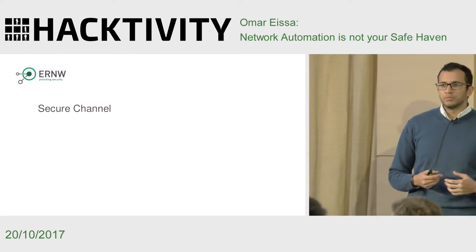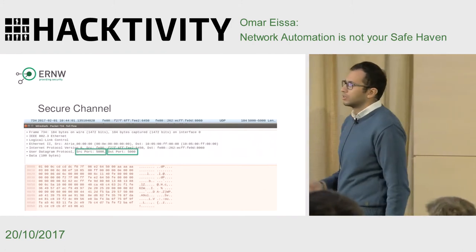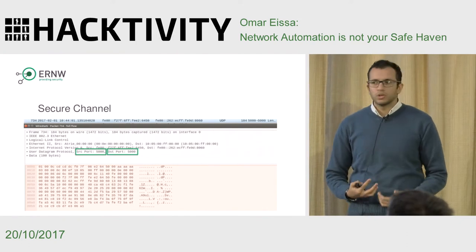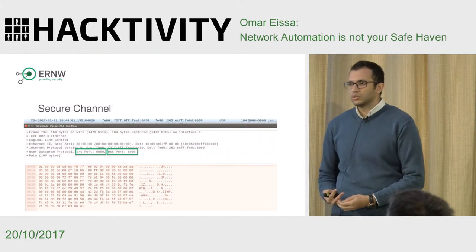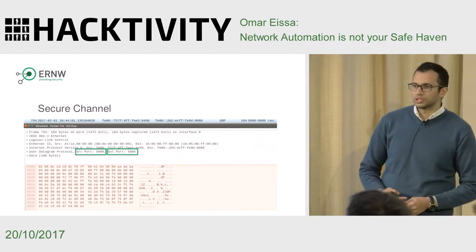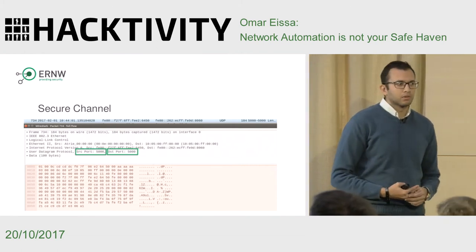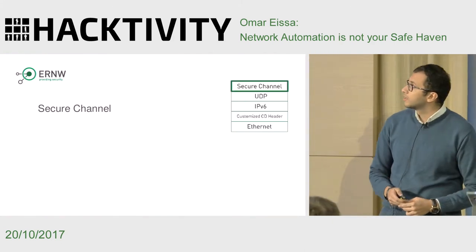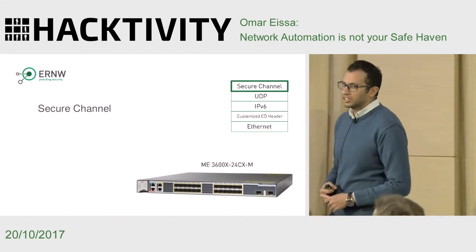Now comes a challenge: the secure channel. What shall I do? It's totally encrypted — DIKE. I have no control over this. What if I'm interested in knowing what's really running inside? Cisco is a black box device — I can't specify which cipher they should use, for example. So the question is, if I'm really interested in knowing everything about this technology, how do I find out? For this, let me introduce you to the ME3600X — one of the very first devices to support Autonomic Network, starting in 2014.